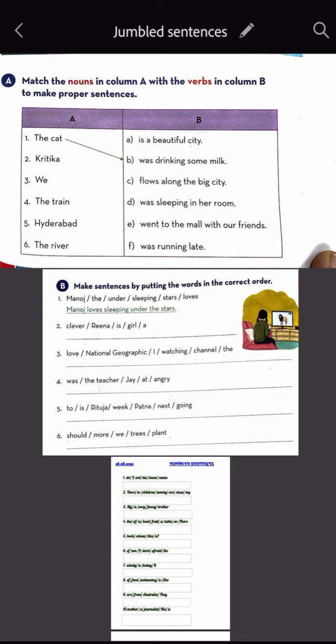So our first is the cat. This will match B part. The cat was drinking some milk. Kritika - now we have to see these six, these five. We have to see what will be with Kritika. Kritika was sleeping in a room. Kritika is sleeping in her room.